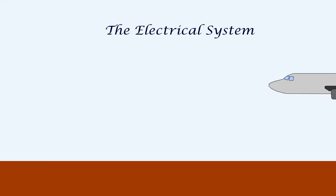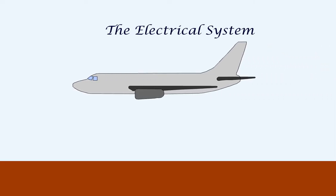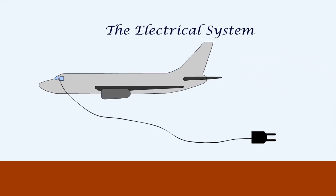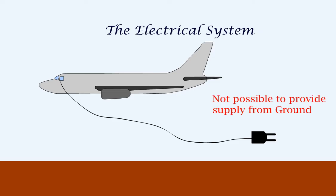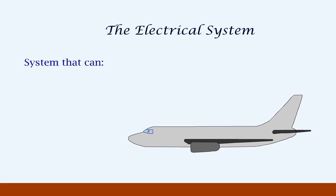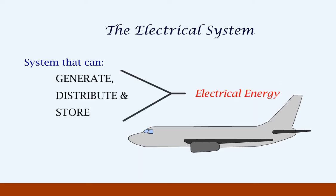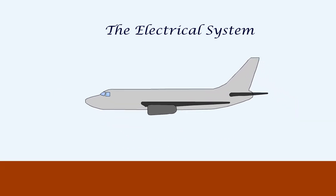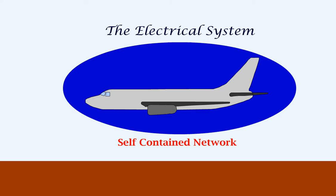Why do airplanes require an electrical system? If we consider an airplane in flight, it is impossible to provide electrical supply from the ground. Hence, we need an electrical system that can generate, distribute and store electrical energy. And more importantly, it has to be a self-contained network.